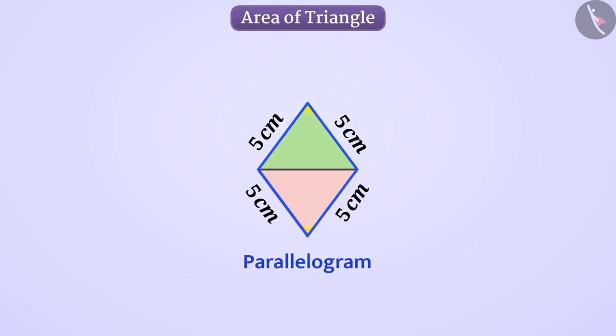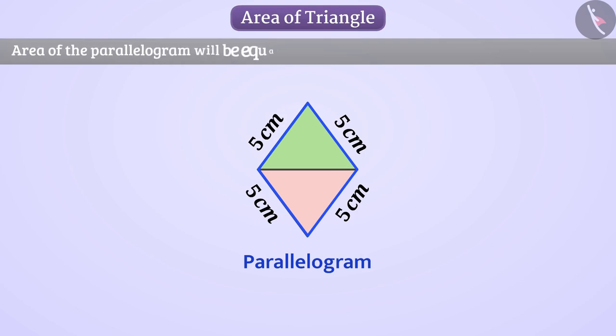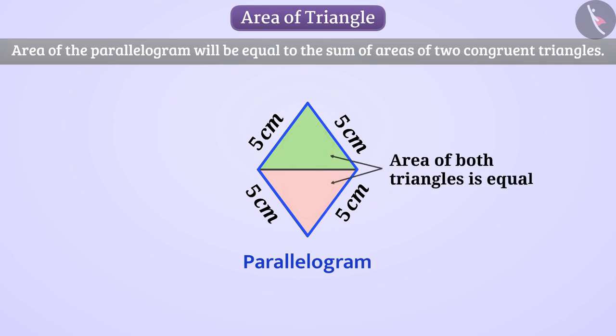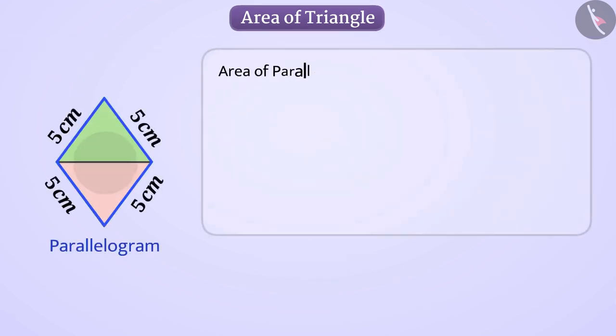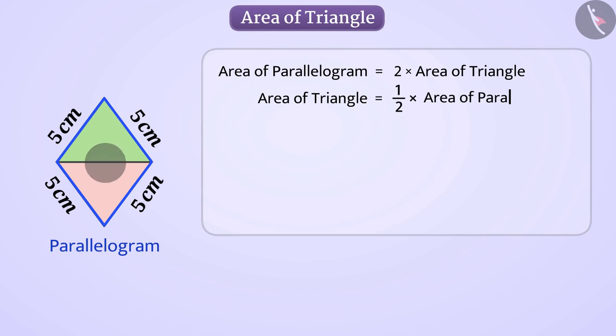Since the parallelogram is made up of two congruent triangles, therefore, the area of the parallelogram will be equal to the sum of the areas of two congruent triangles. Since the area of both triangles is equal, we can say that area of parallelogram is 2 multiplied by area of triangle. That is, area of triangle will be half of area of parallelogram.